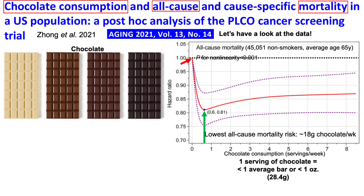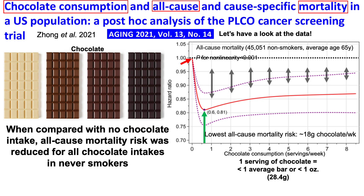So what does the data show? When compared with people who consume no chocolate, the lowest all-cause mortality risk was present for a little bit more than half a serving of chocolate per week — around 18 grams. But for all chocolate intakes from one up to eight-plus servings per week, the dashed purple line is below a hazard ratio of one, meaning all-cause mortality risk was reduced for all chocolate intakes as high as eight-plus servings per week in never smokers.